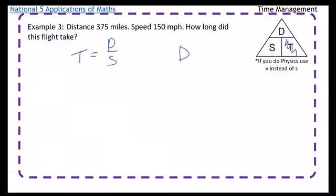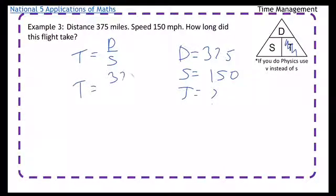So D equals, S equals, and T equals. Distance is 375. Speed is 150. And time is what we're looking for. So time equals 375 over 150. So remember, you're dividing there. So time is equal to 2.5.